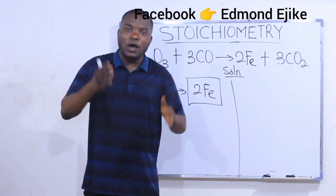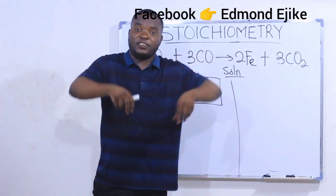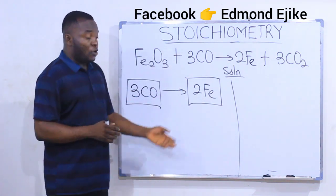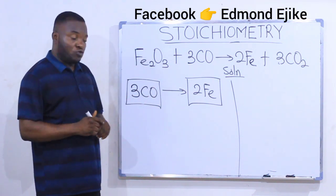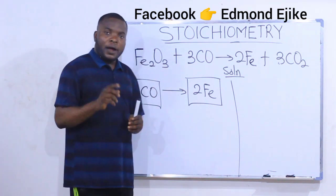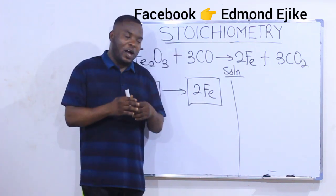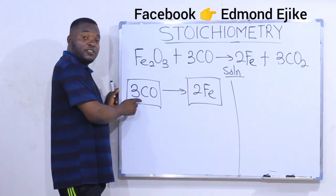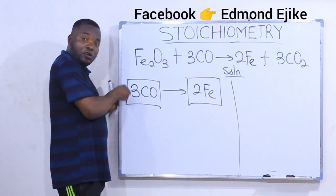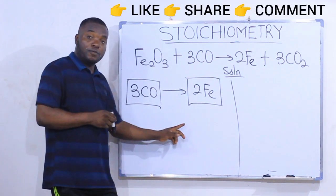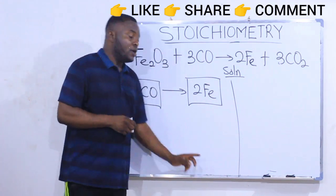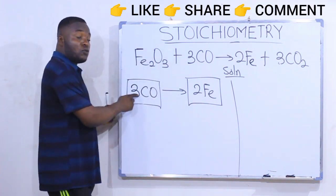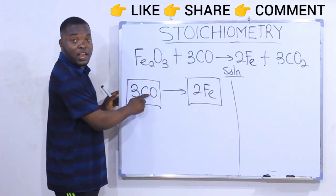Step three says: find out the quantity relationship between those two substances you brought out from the equation. When finding the quantity relationship, ask yourself: in what unit are you looking for the answer? Is it in moles, or in mass (grams), or in volume? From the question, we are looking for it in moles because they said 'how many moles?' Since we are looking for moles, we are not going to change the elements into numbers.